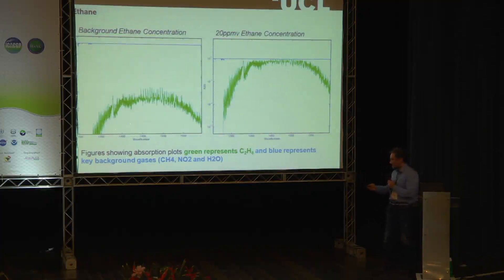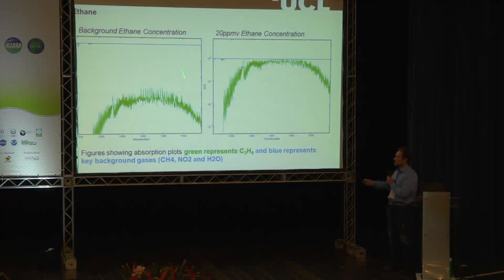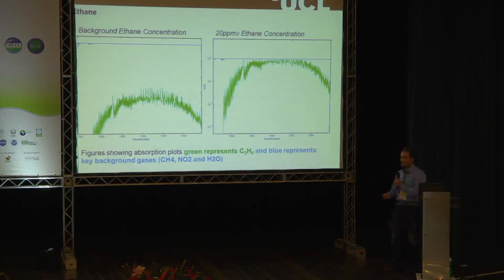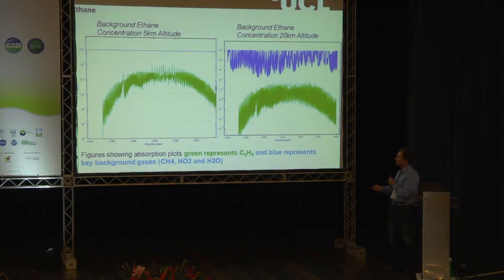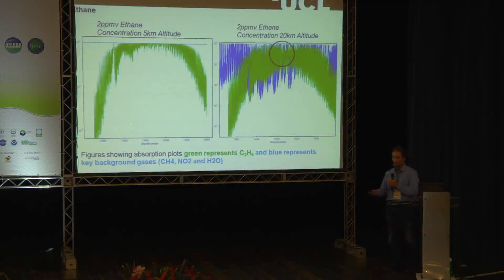Moving on to ethane. Unfortunately, if you remember the HITRAN results shown earlier — this is ethane, this is just the background gases at this wavelength — it's just completely obscured once you look through the whole atmosphere. Even if you increase the ethane concentration to ridiculously high values, it's just not possible. This is a really quite disappointing result and takes away our secondary method for determining methane source type. Even for ACE, at five kilometers there's no chance, and even at 20 kilometers there's just not enough ethane concentration at background levels. Only at 20 kilometers with a two parts per million volume concentration — which is frankly a ridiculous amount — can we actually see it.